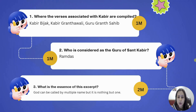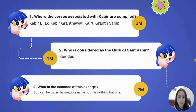The question: where are the verses associated with Kabir compiled? In Kabir Bijak, Kabir Granthawali, and Guru Granth Sahib. Who is considered the guru of Sant Kabir? Ramdas. What is the essence of this excerpt? God is one, but is called by multiple names — it is ultimately one only.